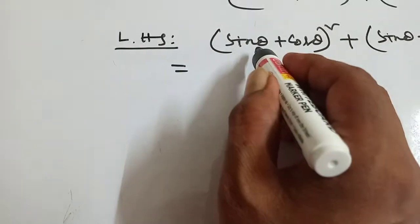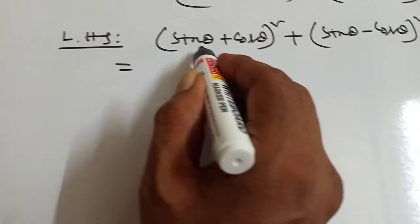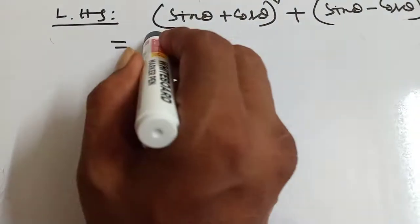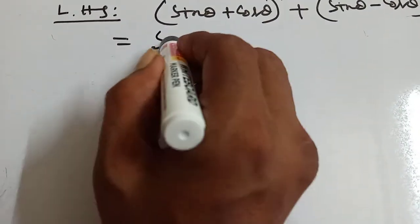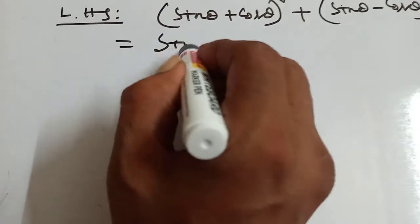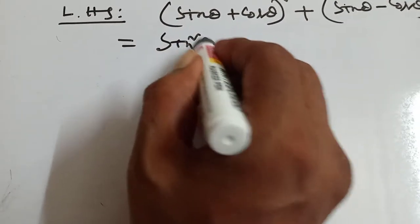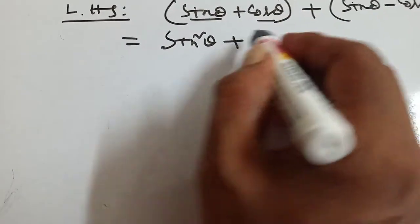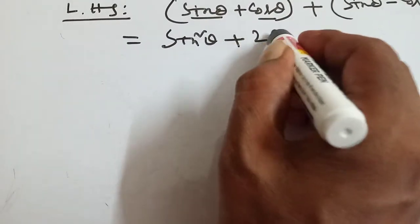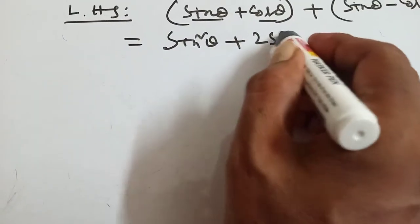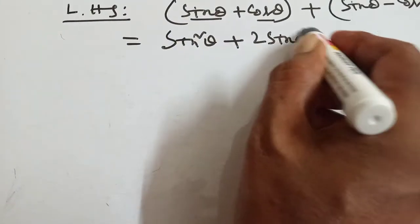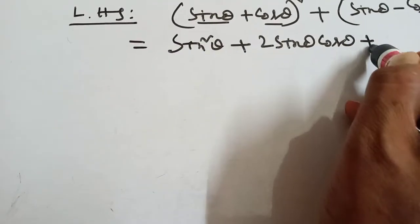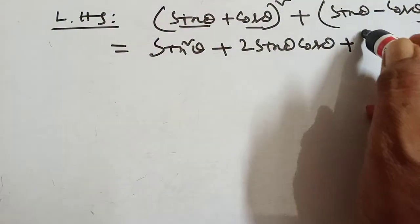Here we write the formula of a plus b whole square, that is a square plus 2ab — so that is sin squared theta plus 2 sin theta cos theta plus cos squared theta.